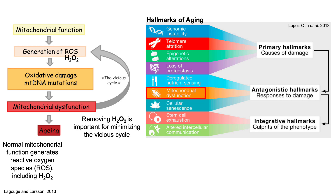With this in mind, removing H2O2 or hydrogen peroxide is important for minimizing the vicious cycle. Note that I said removing — not eliminating. It's impossible to completely eliminate reactive oxygen species, as a byproduct of oxygen-based metabolism, we're going to produce superoxide, which can be converted into H2O2. So how is H2O2 degraded?